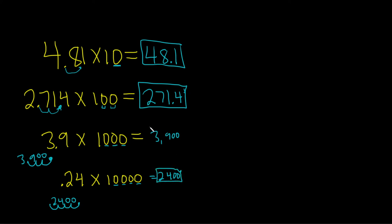So all you do when you're multiplying by stuff like this is you just move it over. If there's one zero, you move it over once. Two zeros twice, three zeros three times. Four zeros, move it four times.